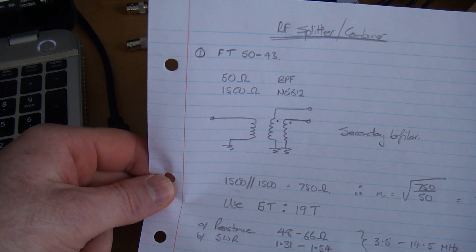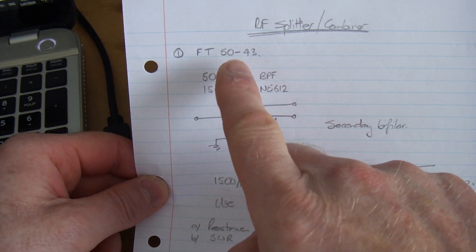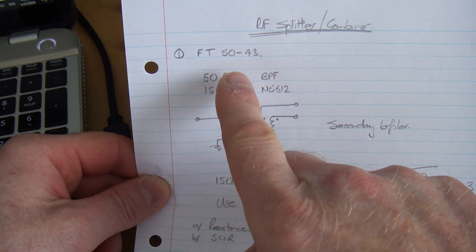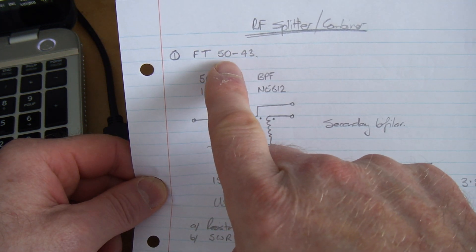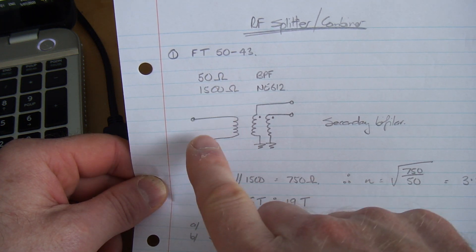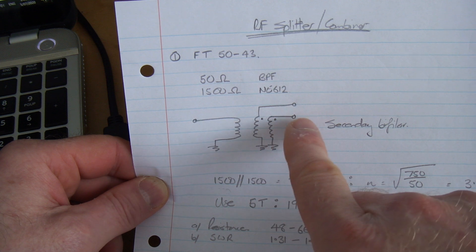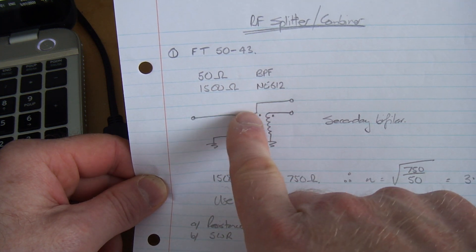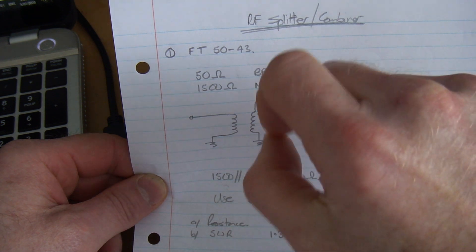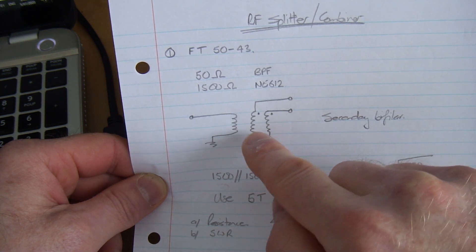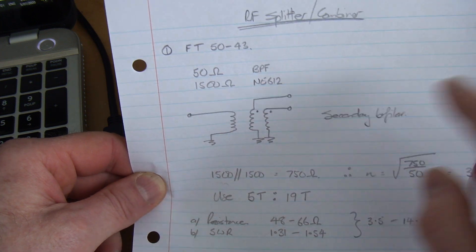The first option was just a very simple toroid. I chose an FT50-43 just because of the size. I was initially playing around with 20 plus odd turns, so an FT37-43 was going to be too small. The secondary is bifiler wound just to make sure I'm getting good coupling and the same tight coupling to guarantee the same output.